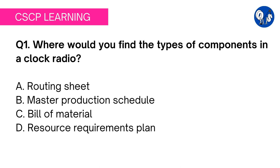Option B: master production schedule. MPS is the process that helps manufacturers plan which products and related quantities to produce during certain periods. Therefore you will not find a list of components in MPS either. Now let's move on to option C: bill of material.